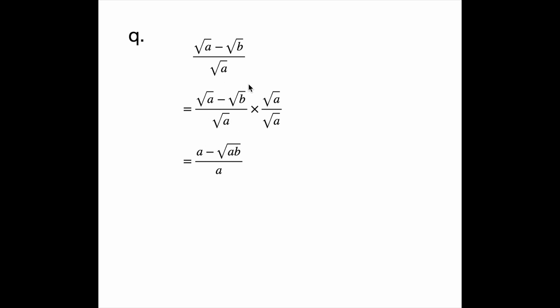Root a times root a is a, so on the bottom I'm going to get a. This root a multiplies that root a, giving me a. And then this root a multiplies this negative root b, giving us negative root a times b.